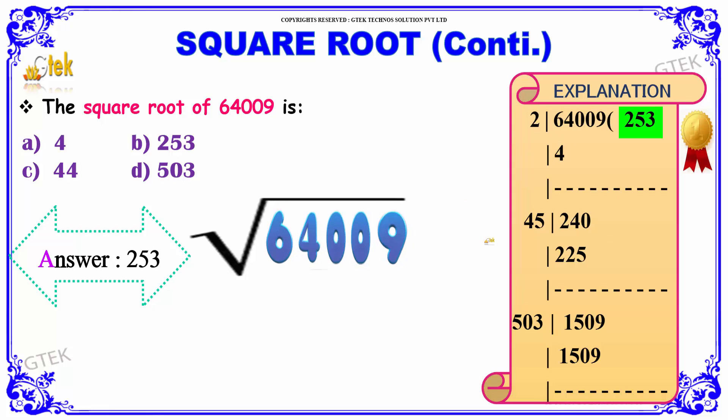Next, we have 2 and 2, hence we have 4 to be our first digit. And 45 into 5 will give you a value which is less than 240. So that will be 225. So write it down. Finding the difference, you get your difference to be 15.